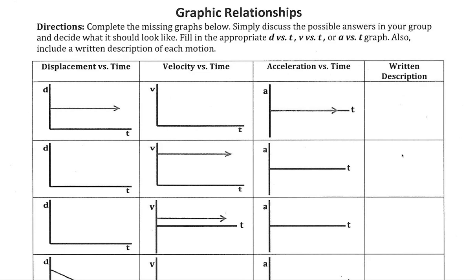In graphing, we are going to translate from one form of information to another - whether we know an object's displacement and translate to a velocity or acceleration graph, or we know the velocity and work backwards to get a displacement graph. This can be a point of confusion for some students, so you are definitely not alone if this is confusing.